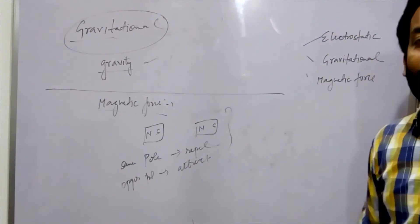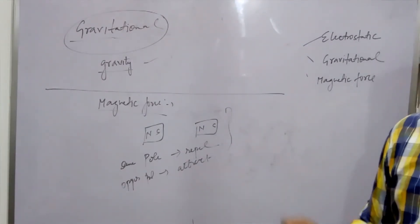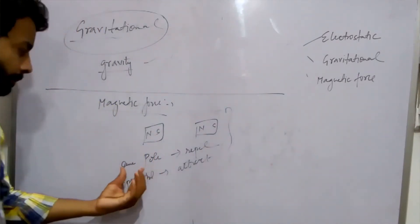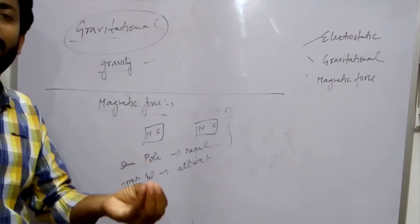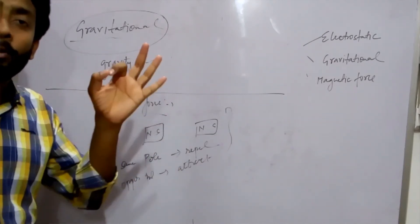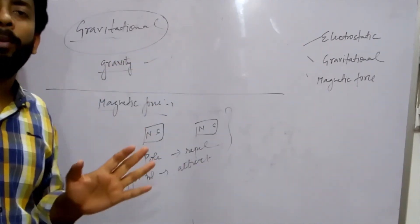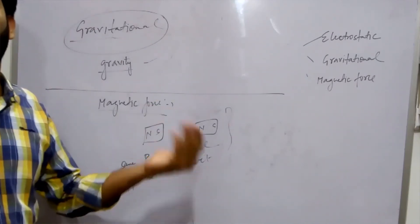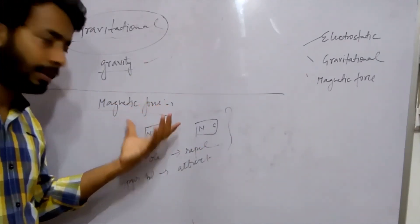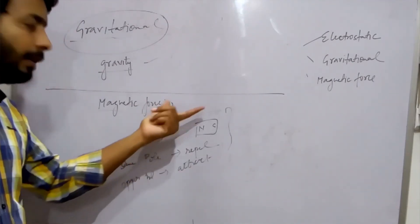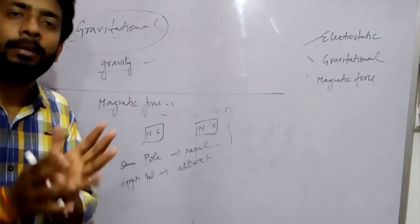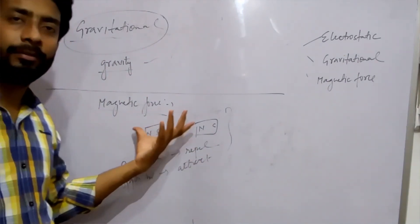Magnetic force is also a non-contact force — the force developed between two magnets without physical interaction is known as magnetic force. The force is developed between two magnets: if both have the same poles, then repulsion; and if different poles, then attraction — all without physical interaction. This is magnetic force.